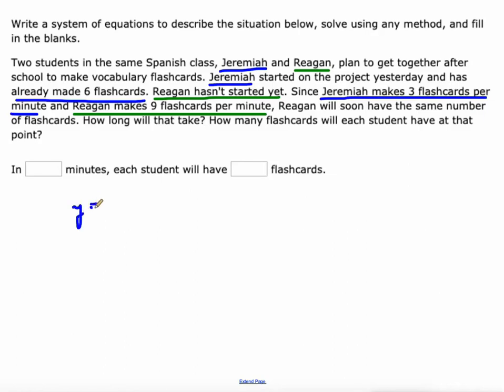All right, so for Jeremiah, his total number of flashcards Y is going to be three per minute, plus the six that he made before they got together. For Regan, he didn't make any, so his Y-intercept's zero, but he's making them at nine flashcards per minute. So there's the two equations. So we can set those two expressions equal to each other because they're both equal to Y. So we'll do 3X plus 6, this is called the substitution method, equals 9X. All right, so we can solve this equation by subtracting 3X from both sides and then dividing both sides by 6. And we can see that X equals 1, and that means in one minute.